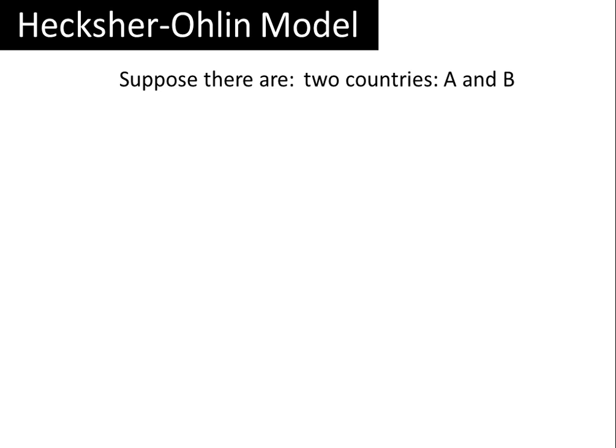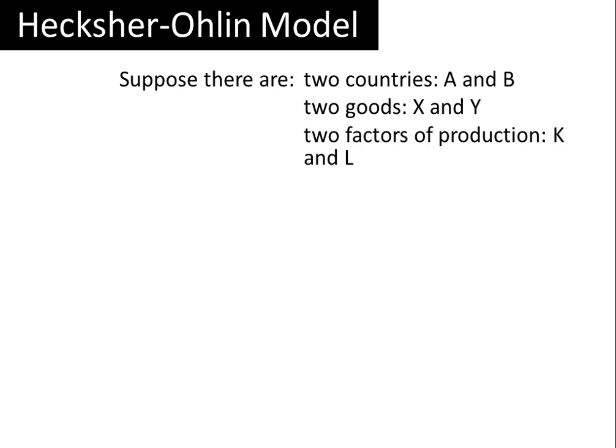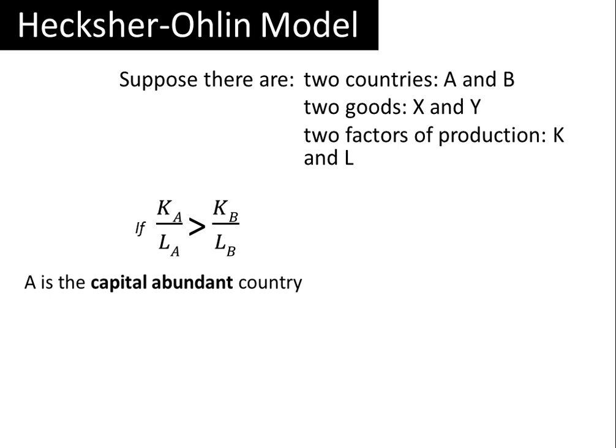Let's assume there are two countries, A and B. There are two goods, X and Y, and those two goods are produced using two factors of production: K, which stands for capital, and L, which stands for labor. Now suppose the inequality K_A/L_A > K_B/L_B is true — then we would say that country A is the relatively capital-abundant country.